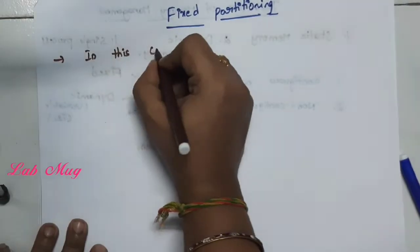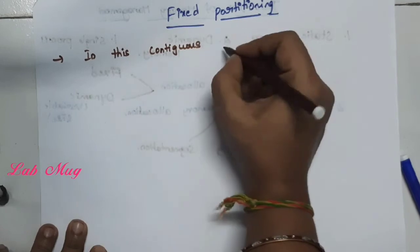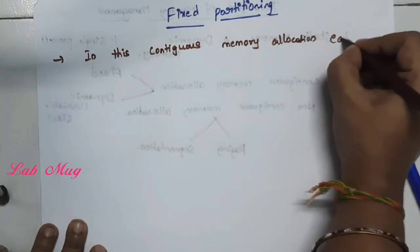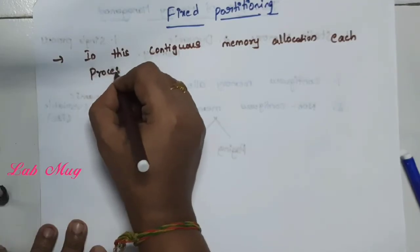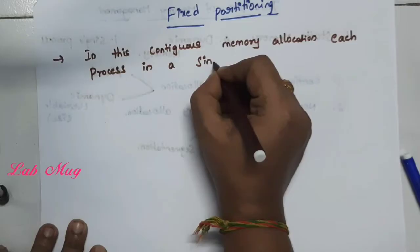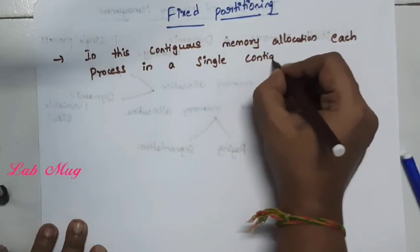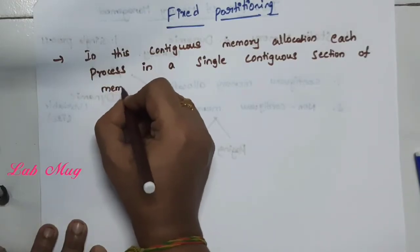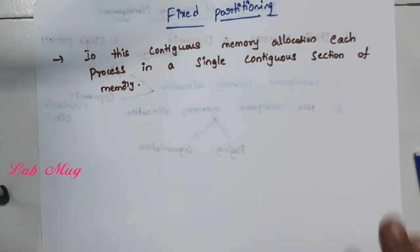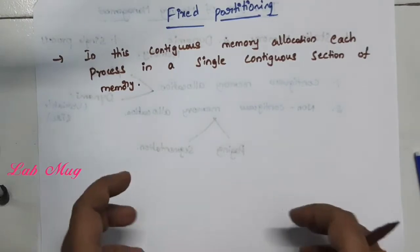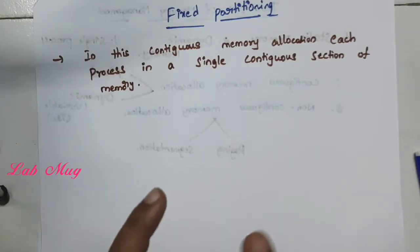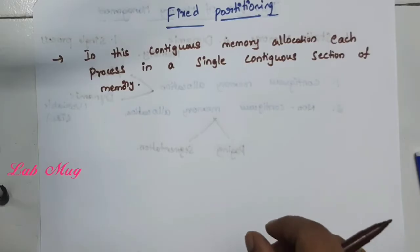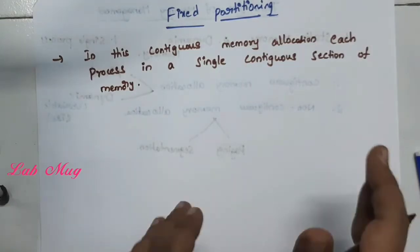In this continuous memory allocation, everything is about processes. Each process is allocated a single section of memory. In this technique, however much free memory is available, that memory is completely allocated to the partitions. For example, suppose we have five processes, and each of those five processes needs 3MB of memory.